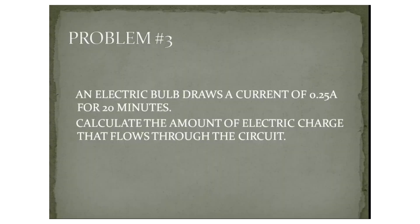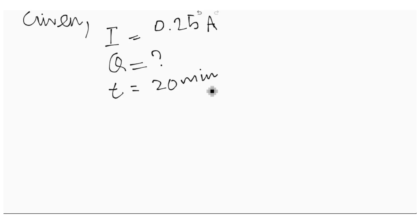Now since you know all about electric current, we will try to solve a numerical on electric current. An electric bulb draws a current of 0.25 ampere for 20 minutes. Calculate the amount of electric charge that flows through the circuit. Now in this problem, what are the given terms? We have been given the current I is 0.25 ampere. Charge Q we have to find it out, and the duration for which the current flows is 20 minutes. Now 20 minutes we have to convert to SI unit. So 20 into 60 seconds is 1200 seconds.